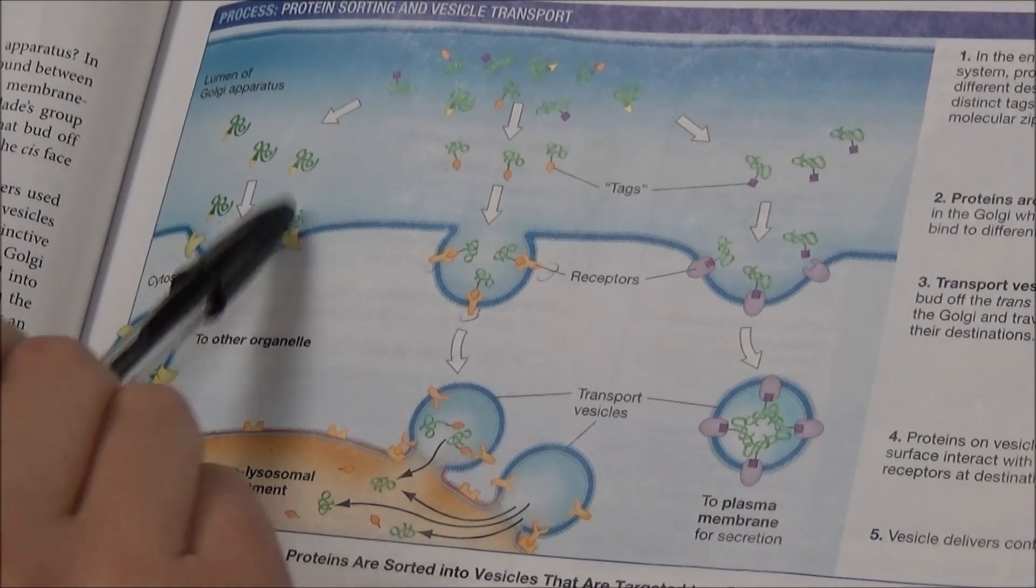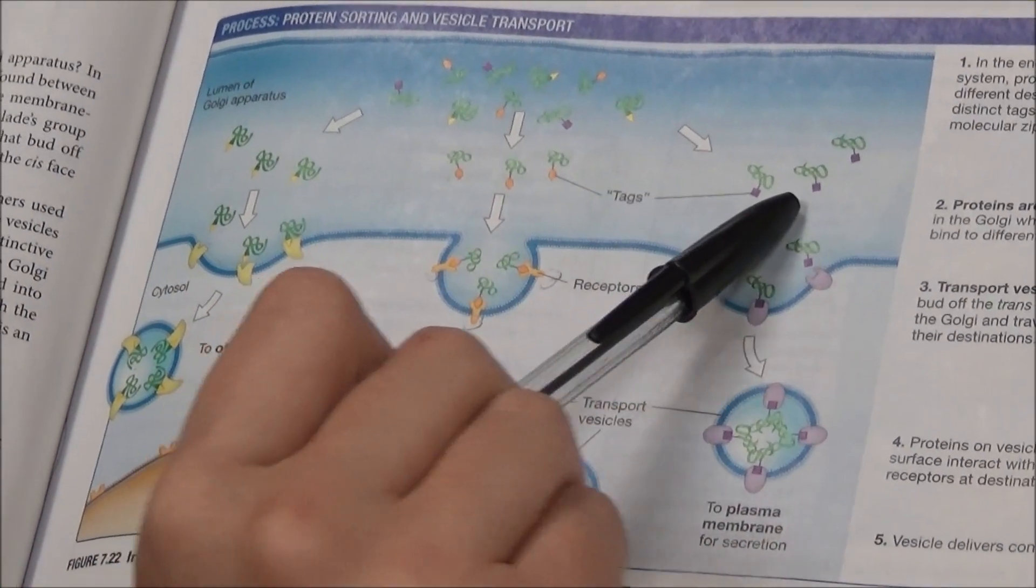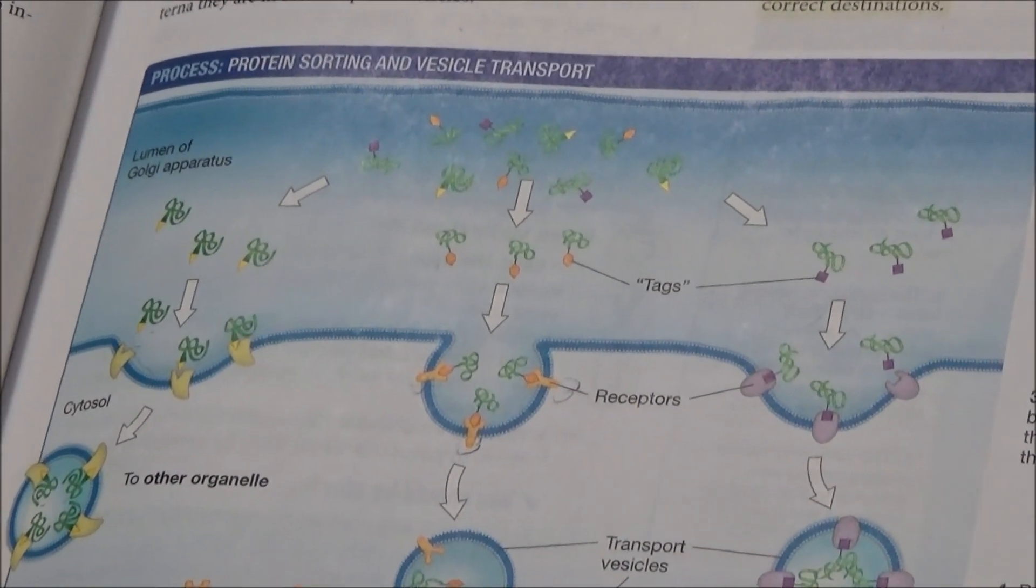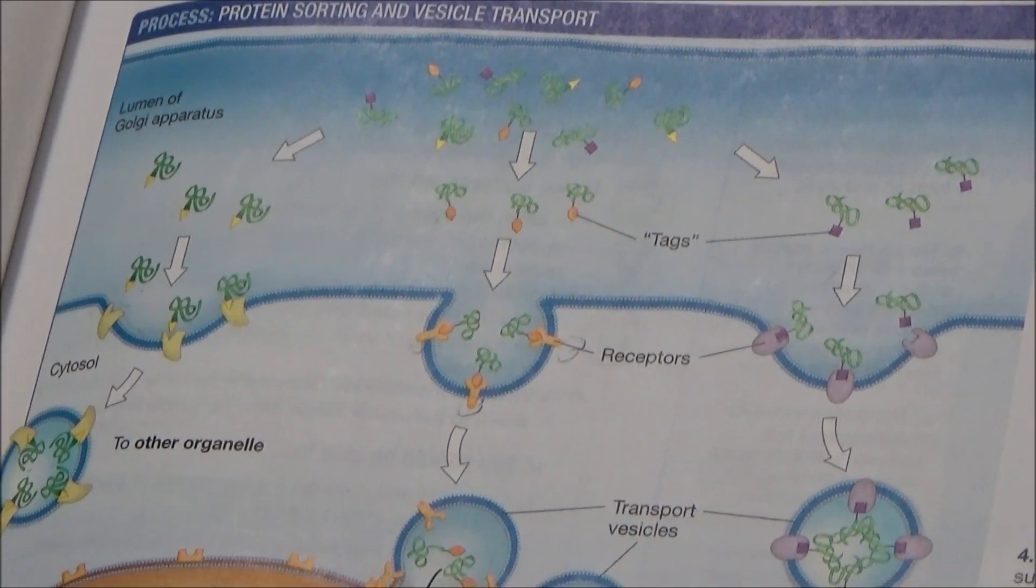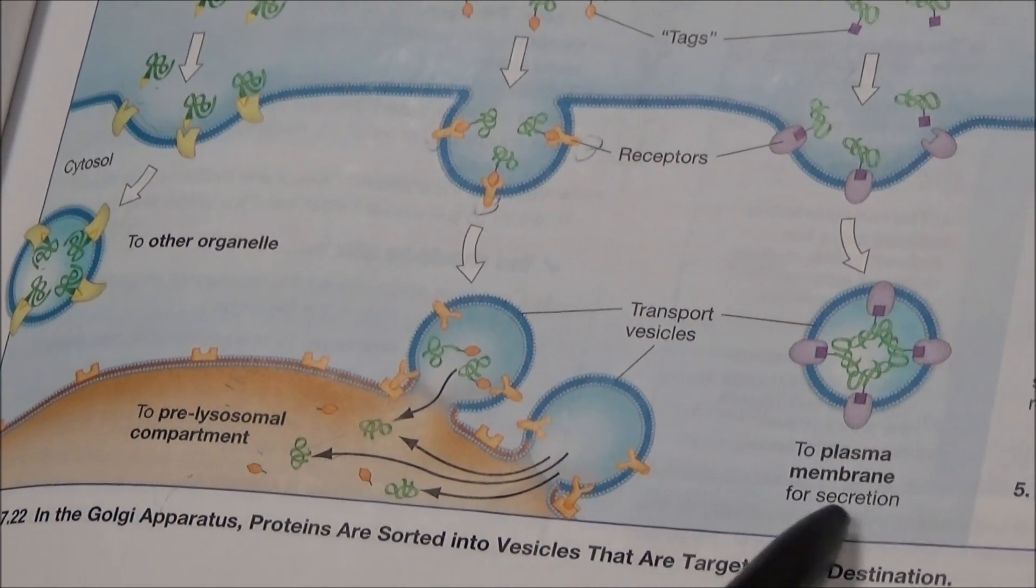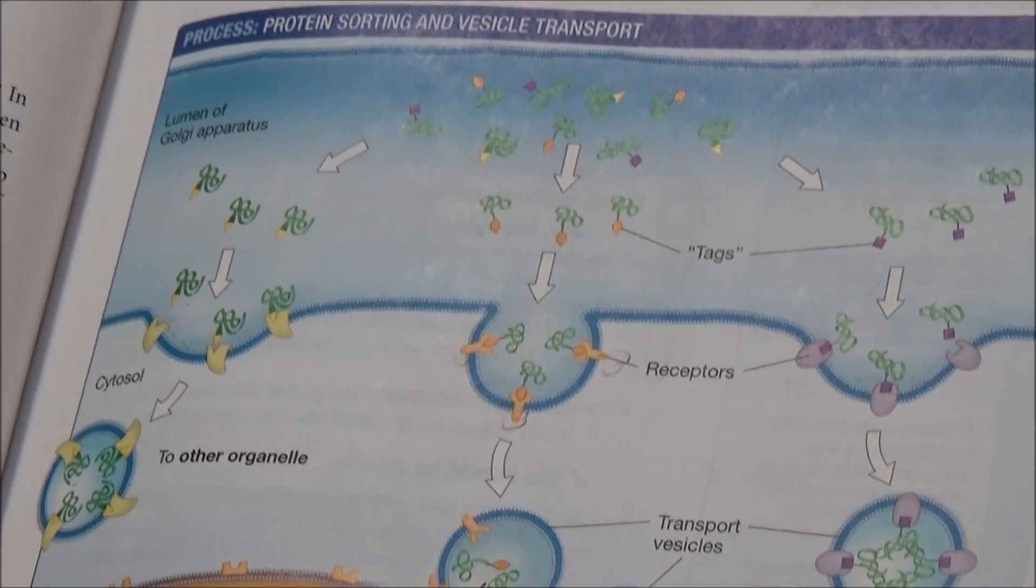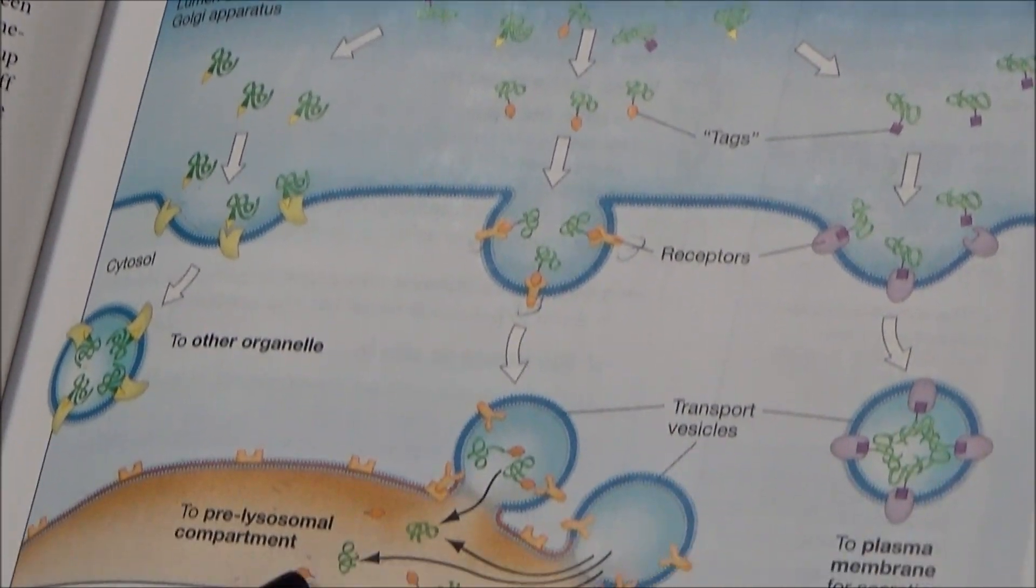We can see yellow, orange, and purple here. Some of these proteins are going to be taken to other organelles, some are going to be taken to the plasma membrane for secretion. In this case, we're just going to be following ones that are taken to the lysosomal compartment.